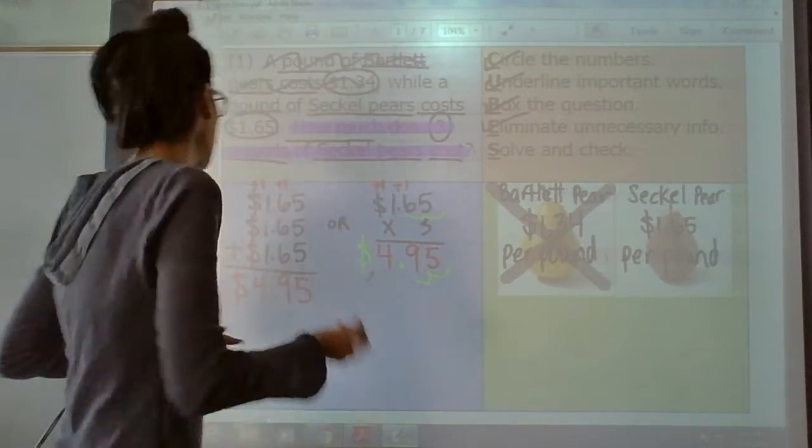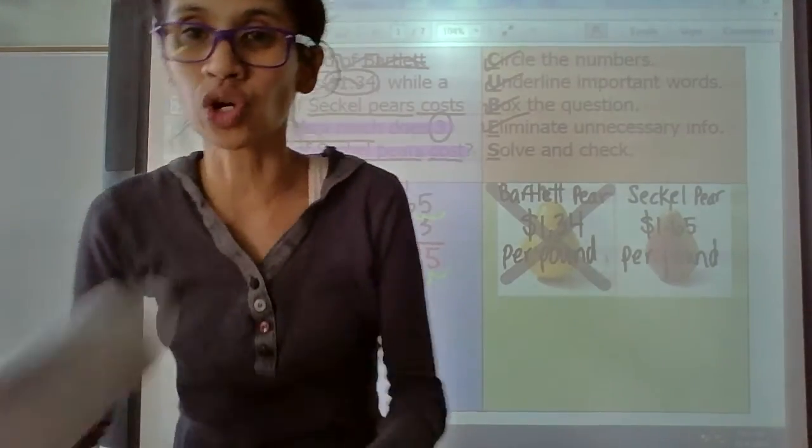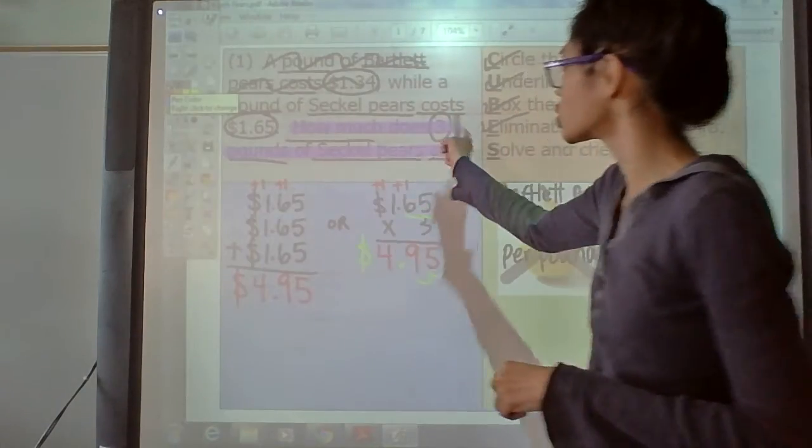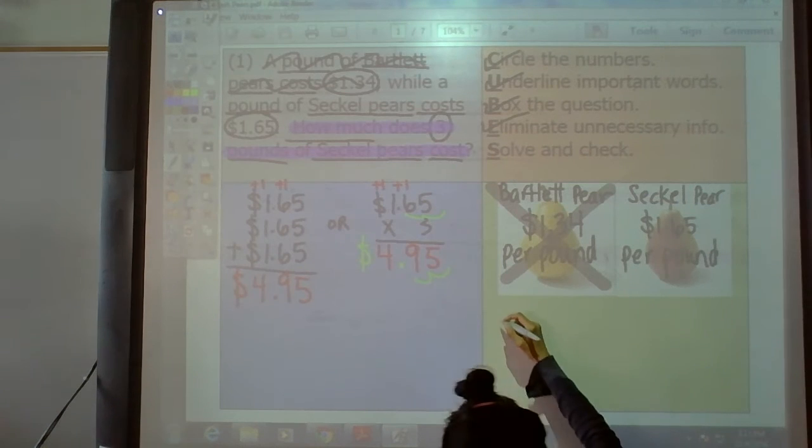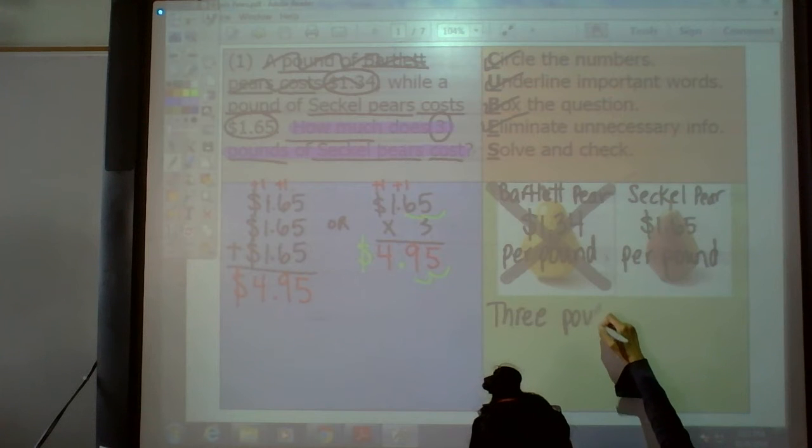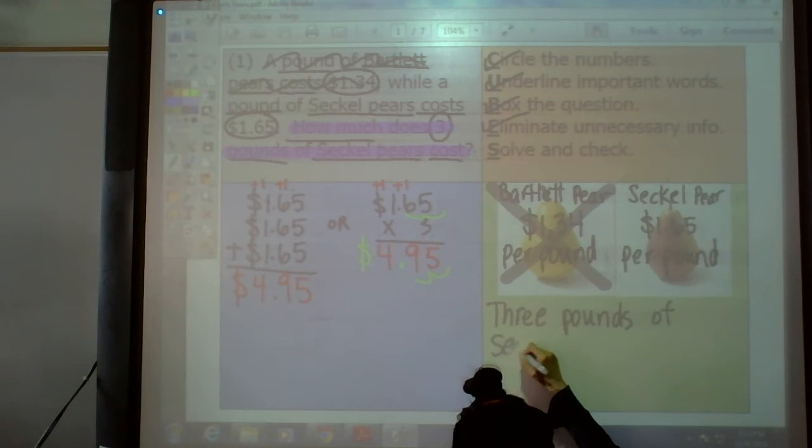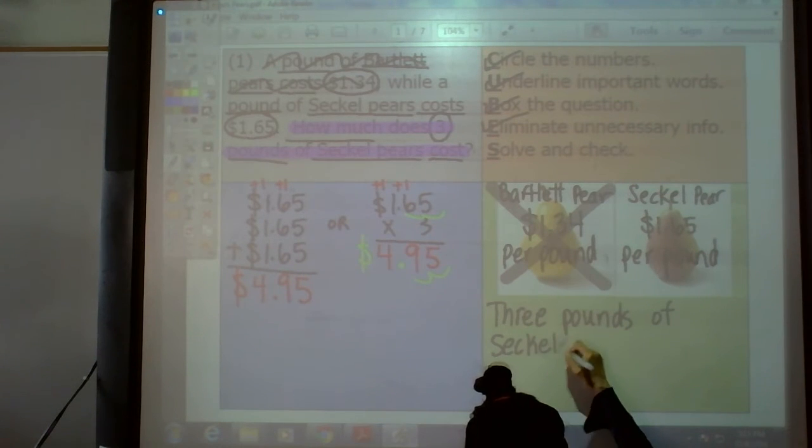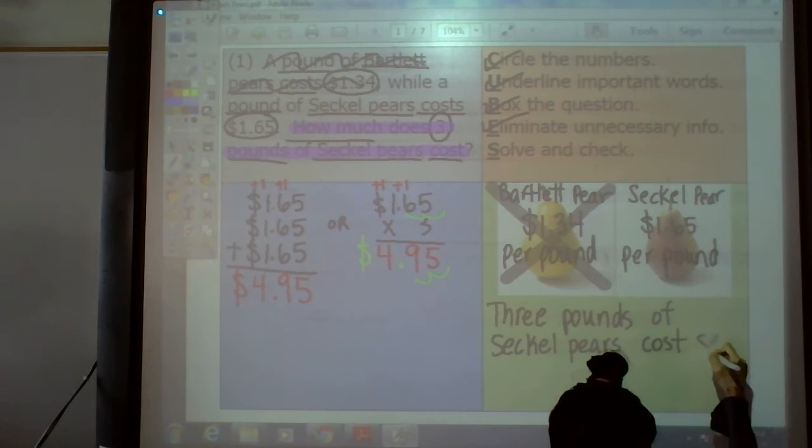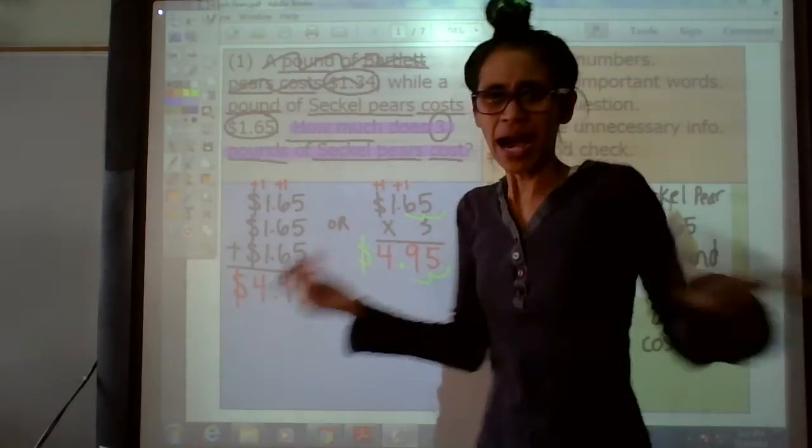Now let's write the answer for the question. Make sure you show your work right there. Show your work solution. Let's write the sentence. How much does 3 pounds of Seckle pears cost? Let's write 3 and write the word at the beginning of the sentence. 3 pounds of Seckle pears cost how much? $4.95, period, at the end. I am done with that.